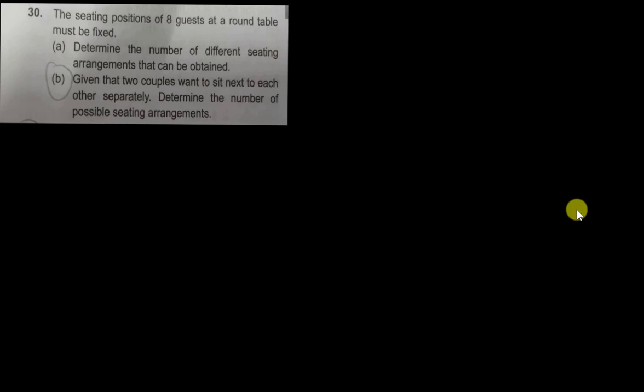All right, quite a lot of students asked me about this round table question, so let's see how to solve it. The sitting position of eight guests at the round table must be fixed. What we want to do here is they ask us to determine the number of different sitting arrangements that can be obtained.